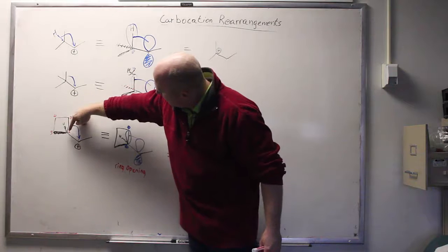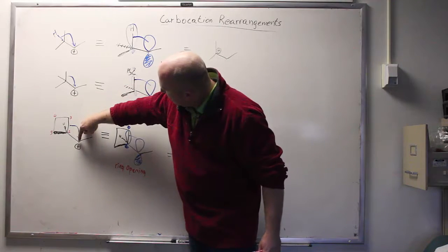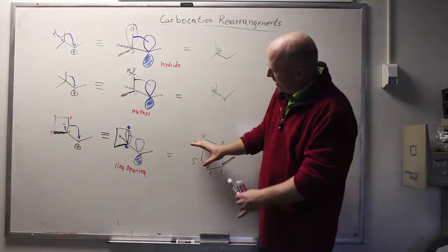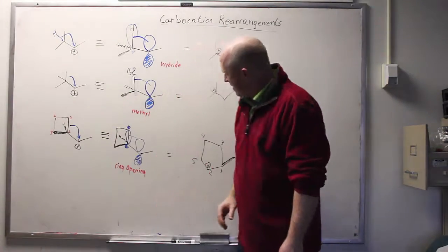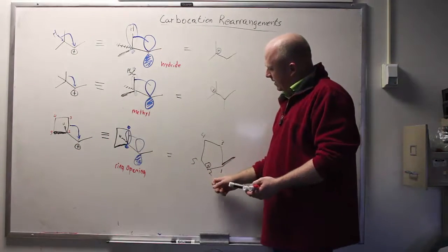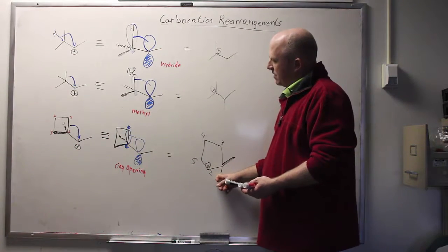Again, what happens is the bond between 2 and 3 slides over and becomes a bond between 1 and 3. This should look ugly because I've drawn it largely to match that as opposed to how the structure will actually look. Notice it was a secondary cation before, it's still a secondary cation after this happens.